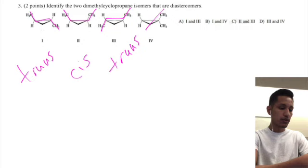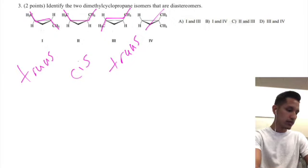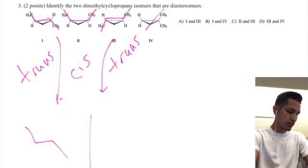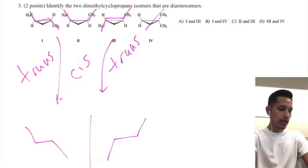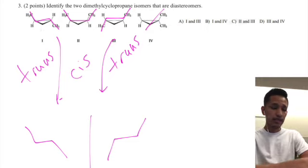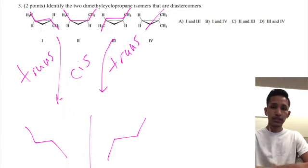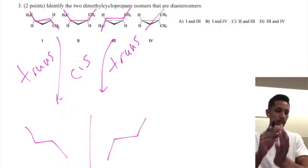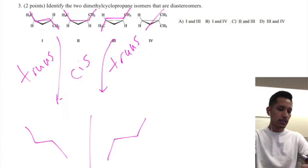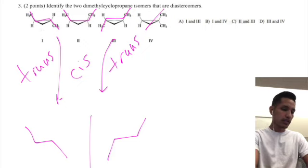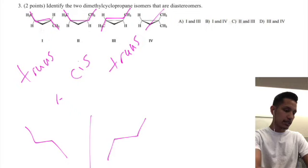Okay, so now we're going to go ahead and look at our options and see what we get. So one and three, those are two trans, and if we were to bring those down you could kind of imagine how both of these, if this was a mirror in the middle, how these could flip on one another. And so these would actually be enantiomers, so that is not the correct answer.